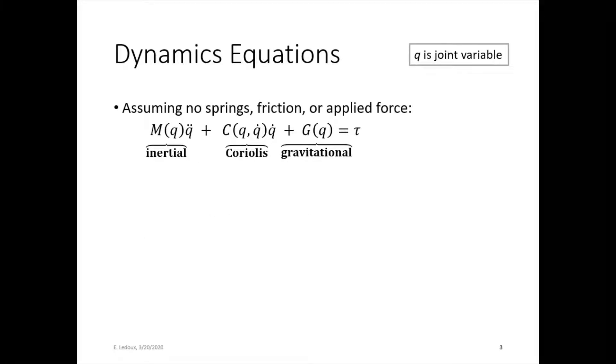Now in this equation, q is the joint variable. We want to get all the dynamics equations into the form M(q)q̈ + C(q,q̇)q̇ + G(q) = τ. M(q) is the inertial matrix, C(q,q̇) is the Coriolis matrix, and G(q) is the gravitational matrix.